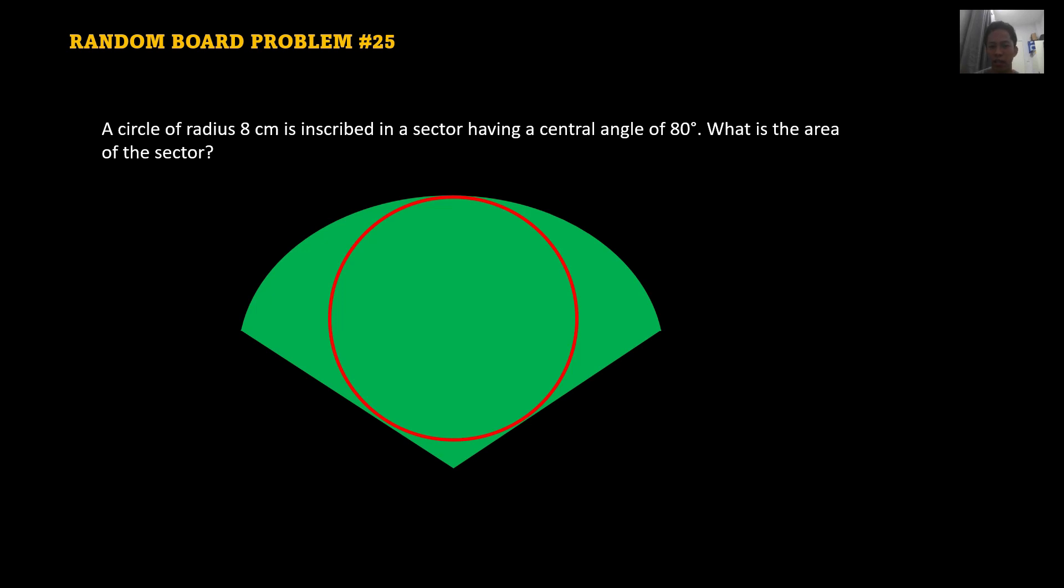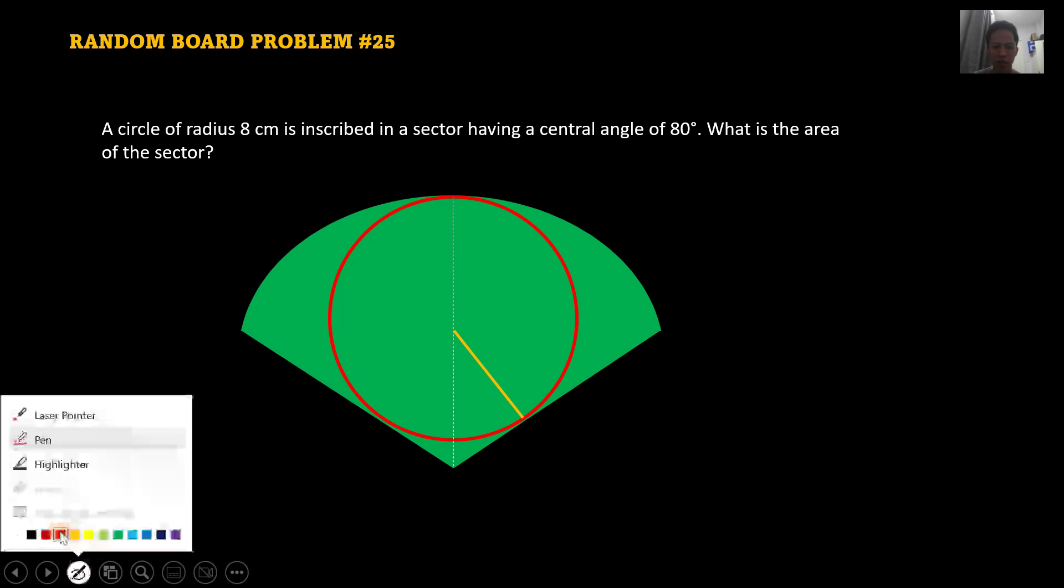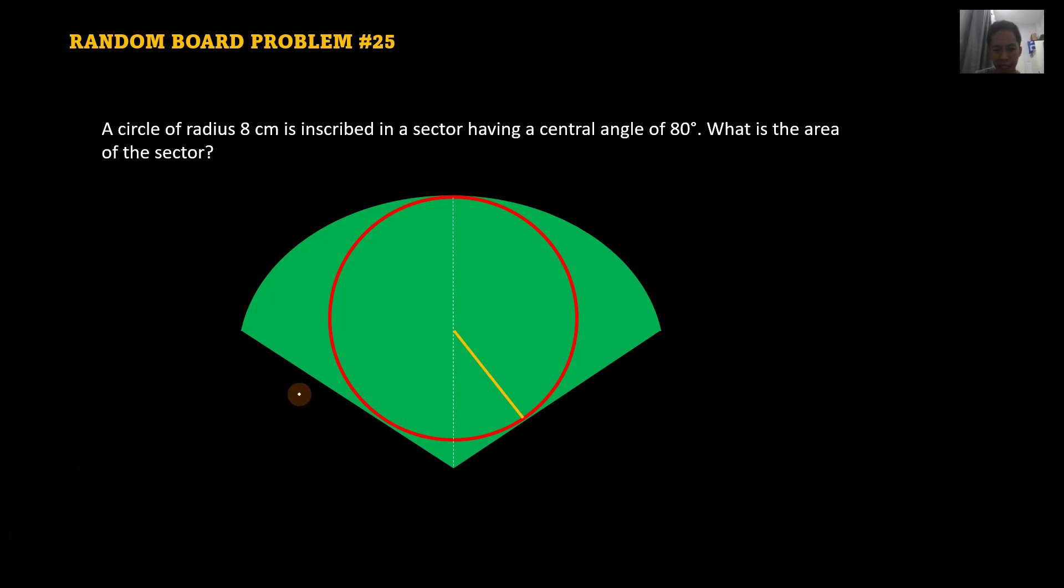So here in this case, let's draw a line, a central line, and then let's draw the radius of that inscribed circle. So what we need to find here is the area of the sector. So let's just let that radius, this larger radius, that is actually the radius of the sector. This smaller radius, this is the radius of that circle which is 8 centimeters.